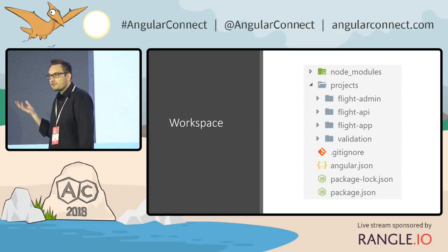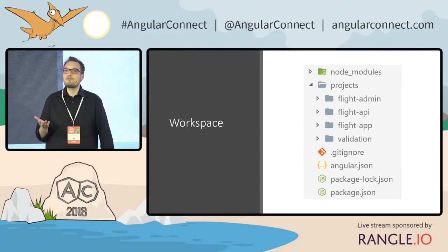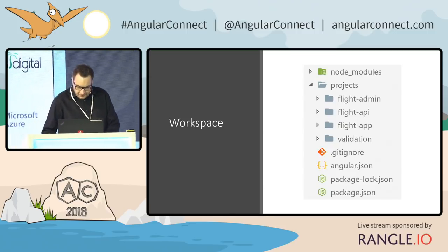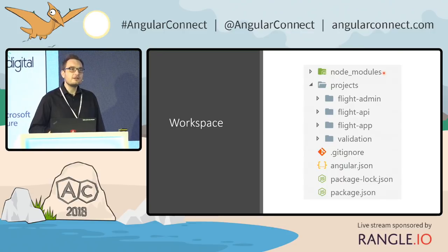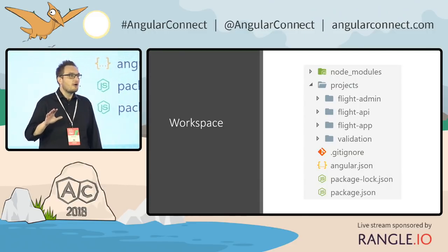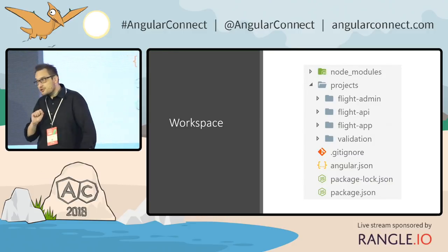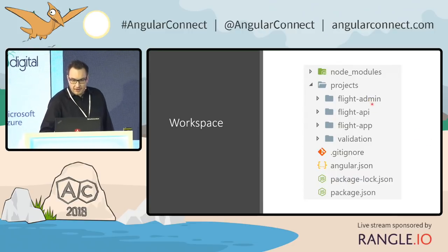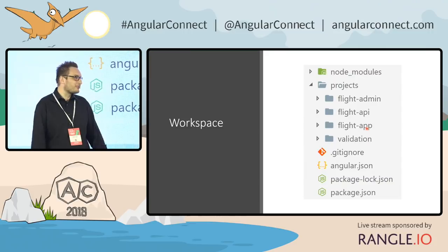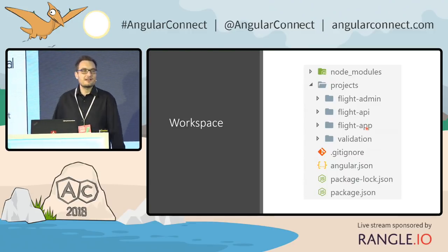A monorepo is just a folder structure checked into your source control. You have a big project folder containing many subprojects — each subproject goes in one of those subfolders. Everything is put together. The best thing about this mono repo approach is that you have only one node_modules folder, meaning each and every subproject uses exactly the same version of your dependencies — the same version of Angular, Bootstrap, and all other libraries.